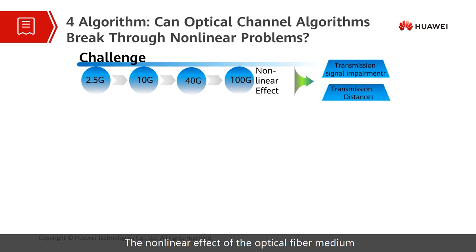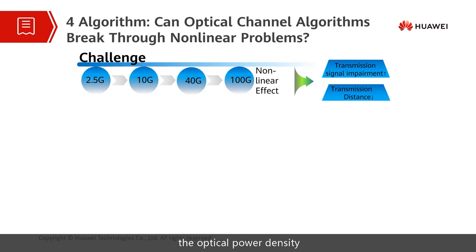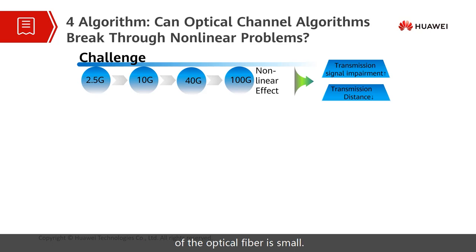The non-linear effect of the optical fiber medium comes from the non-linear polarization effect of the optical fiber. When the incident optical power exceeds a certain value, the optical power density in the core of the optical fiber is too high because the effective cross-sectional area is small, and the non-linear polarization of the optical fiber material is induced.